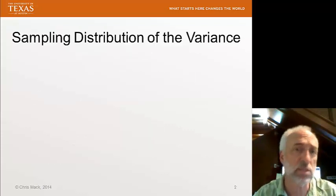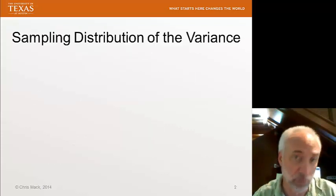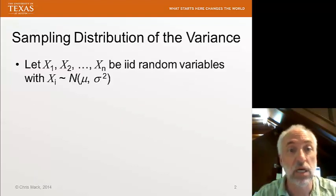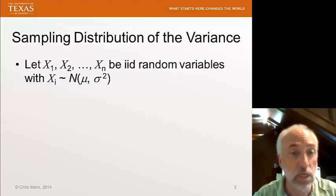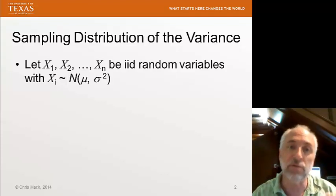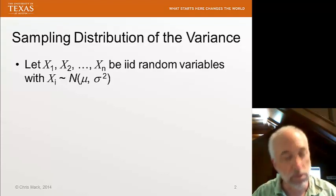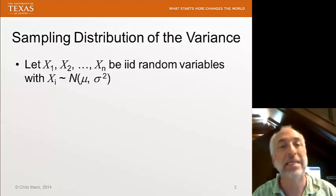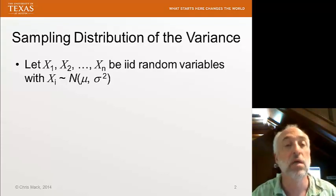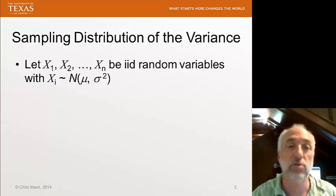So, what is the sampling distribution of the variance? We've already discussed this in a prior lecture. If we have n independent and identically distributed random variables, x1 through xn, and we assume that they're all normally distributed, this is going to be a very key assumption. We are not going to calculate, in general, what the sampling distribution of the variance will be. Instead, we'll only look at this one special case.